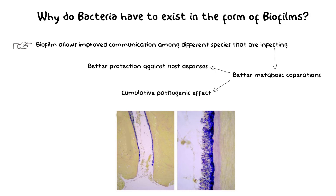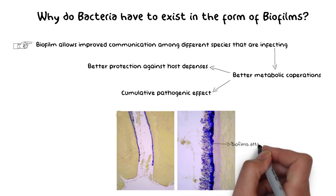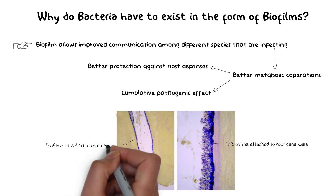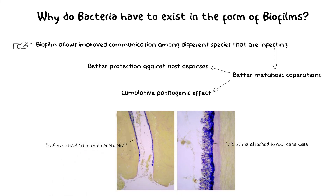These biofilms are attached not only along the walls of main canals but may also spread to the apical ramifications, lateral canals, and the isthmus. Any effective endodontic therapy requires effective antimicrobial strategies to eradicate these biofilms and the bacteria residing within. Therefore, elimination of biofilms should be the main target for any effective endodontic therapy.